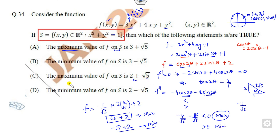So 2 + √5 is the maximum value. 2 - √5 is the minimum value. So the right answer is C and D. This is the way you can solve this question.